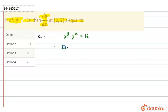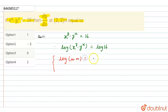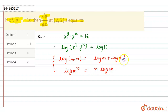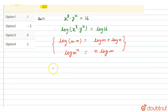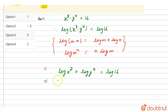Now, we have to take log on both sides. We get log of x power y dot y power x is equal to log 16. We know that in log, we have the property: log(m·n) = log m + log n. Also, if we have log m power n, we can write the power as n log m. Using these two properties, we get y log x plus x log y is equal to log 16.